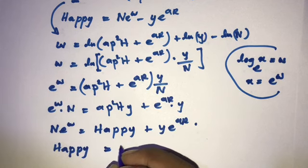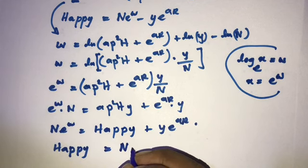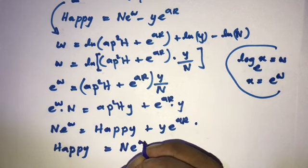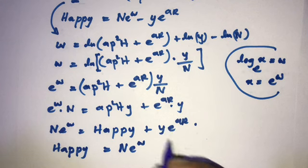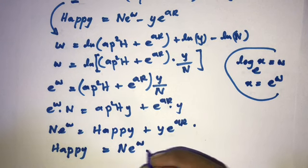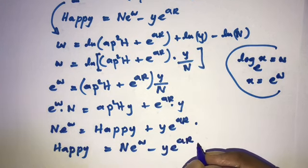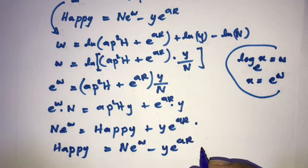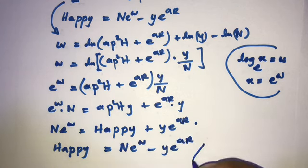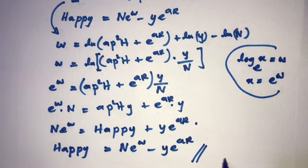Happy is equal to n times e to the w. And that gives us our result — 'Happy New Year'! We are done. If you like this video, please subscribe to this channel. Thank you for watching.